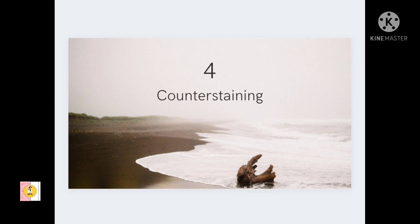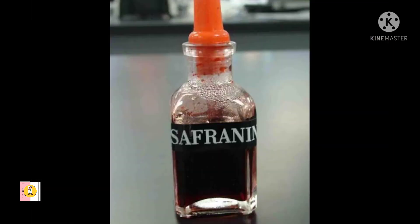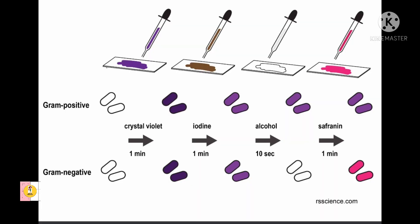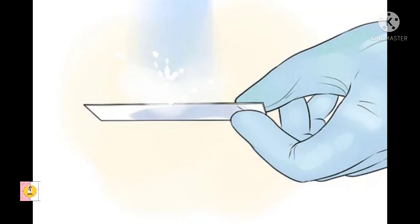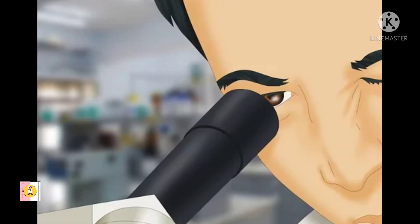The final step is counter staining. In counter staining, we will cover the smear with 0.5% safranin. Safranin is a pink-colored dye — in the first step we used methyl violet, which is a violet-colored dye, and in this final counter staining step we use safranin, which is pink. We allow it to act for about one minute, then wash with water, allow it to dry, and then observe.